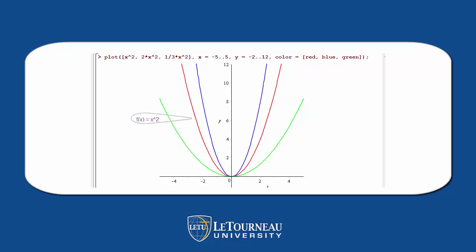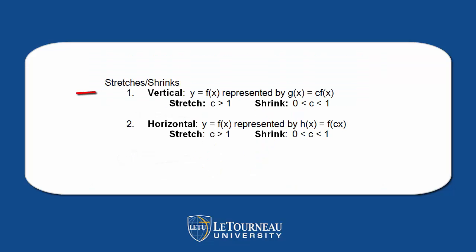Notice the red function was x squared. The blue was 2x squared — notice it's shrunk. And one-third x squared is stretched.